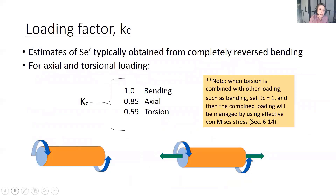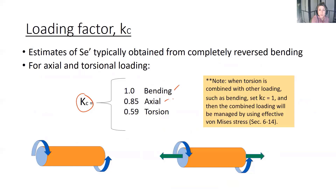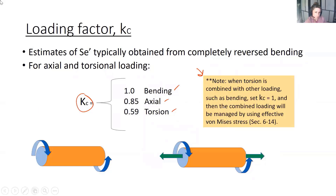The loading factor KC accounts for different types of loading in real life, since SE prime estimates are typically obtained from completely reversed bending. For bending, KC = 1. For axial loading, KC = 0.85. For pure torsion, KC = 0.59. However, when torsion is combined with other loading such as bending, set KC = 1 and let the von Mises analysis manage the combination. So unless you have pure axial loading, set KC = 1.